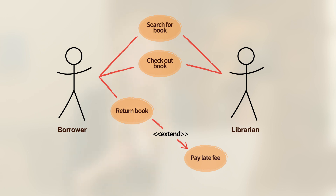Now we've ended up with a pretty comprehensive diagram involving a librarian, a borrower, and all sorts of book functionality, as well as an extend relationship that says there should be late fees imposed when someone returns a book. So we've started with a pretty simple representation of our library system. This is the best way to start with UML and generally in the unified process.